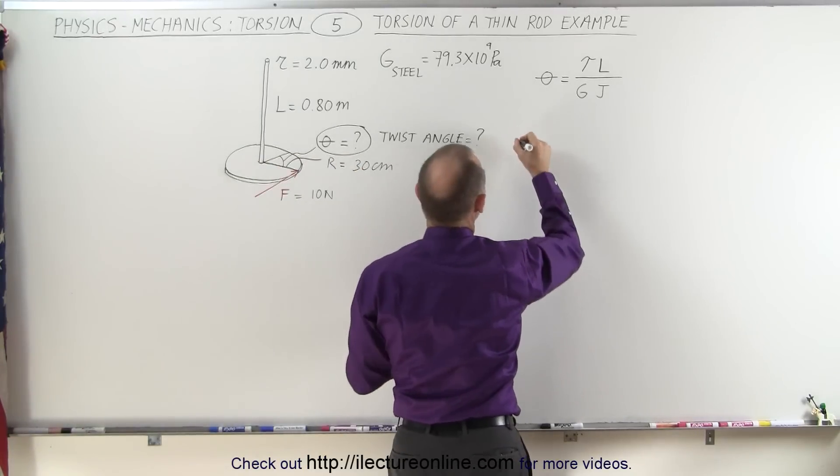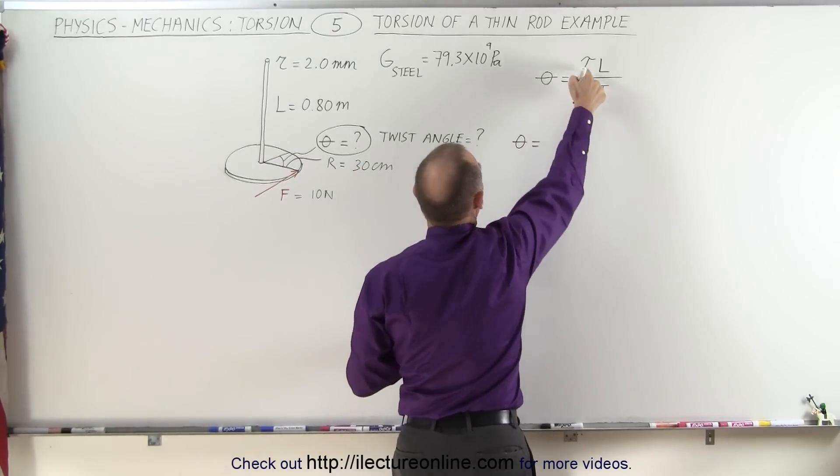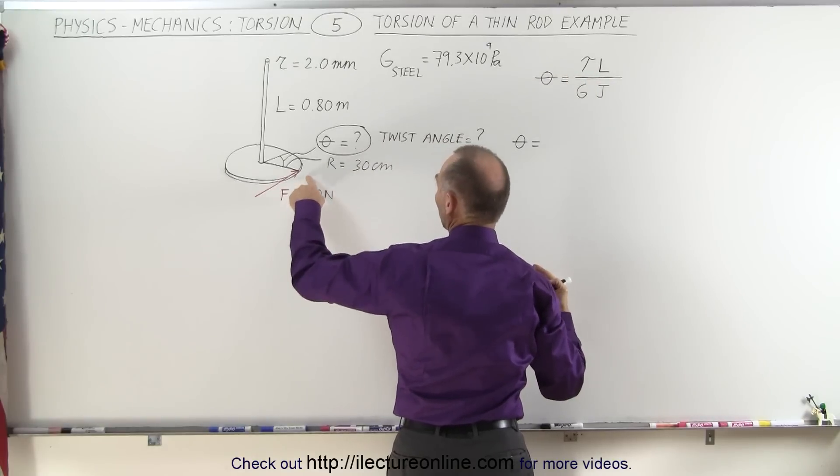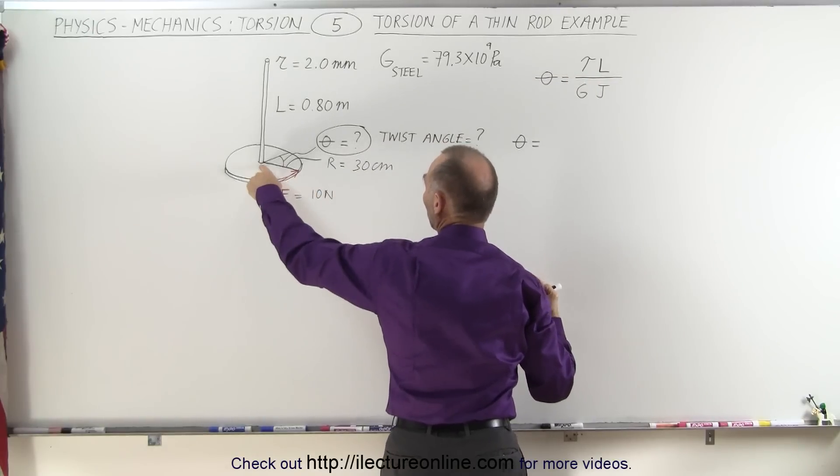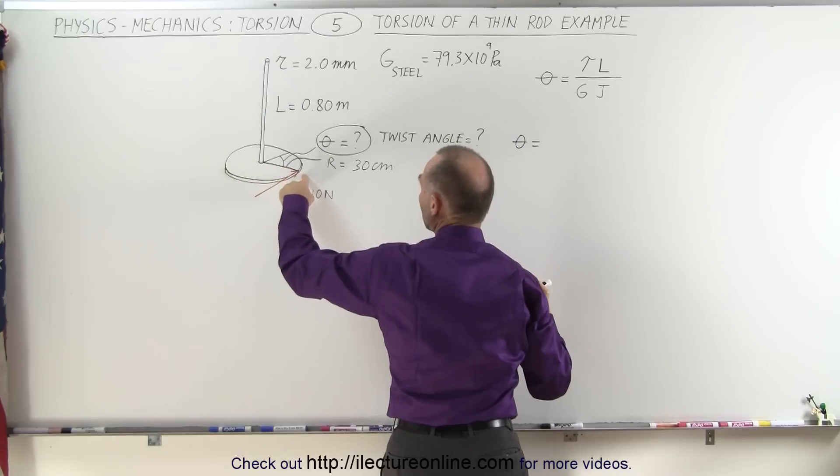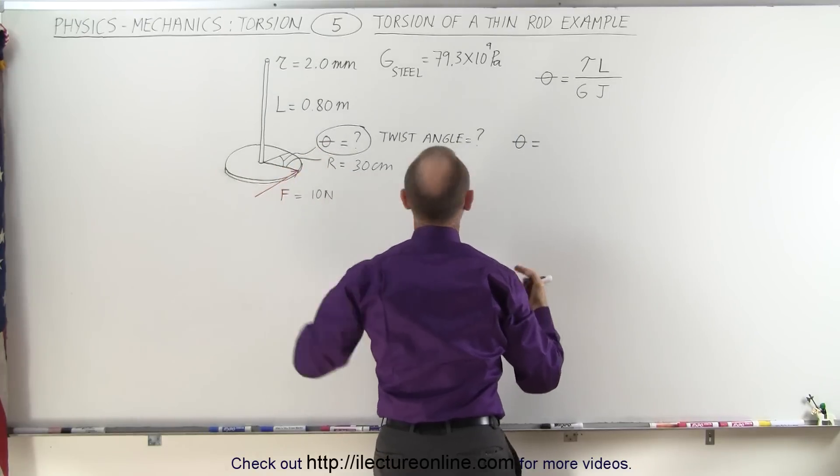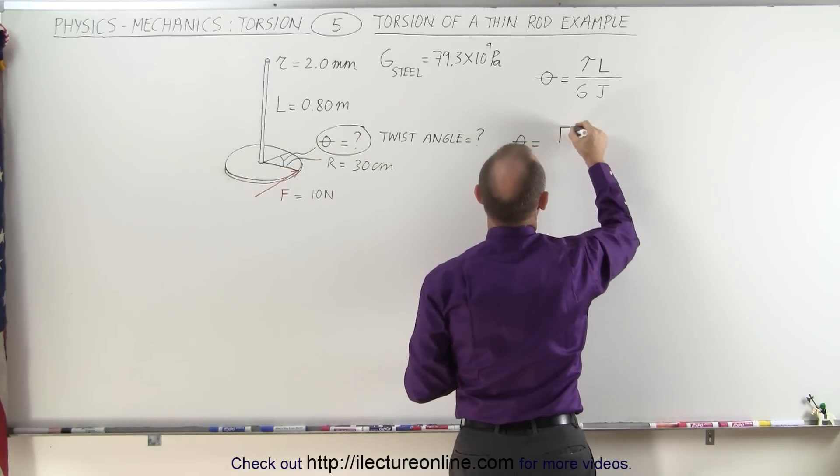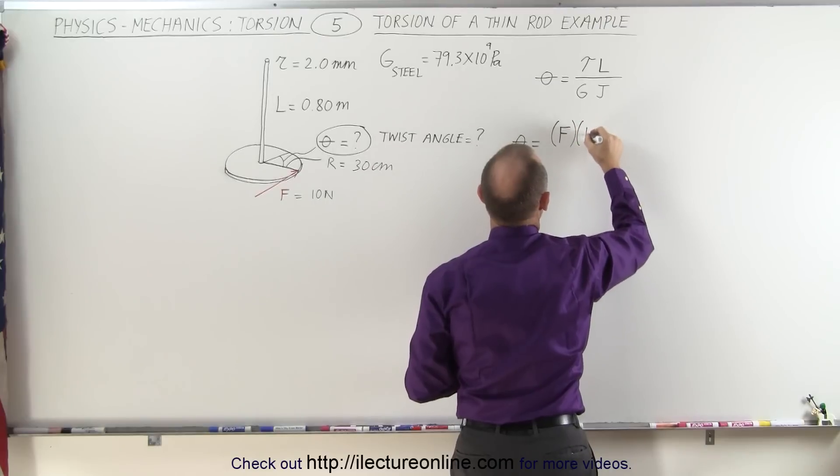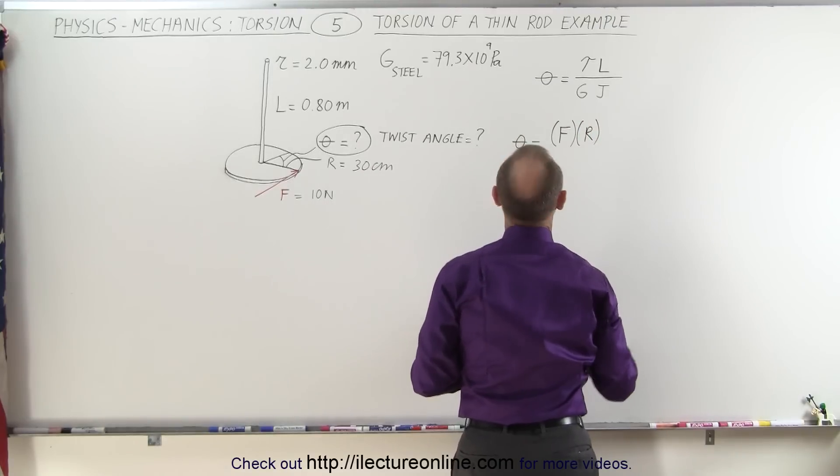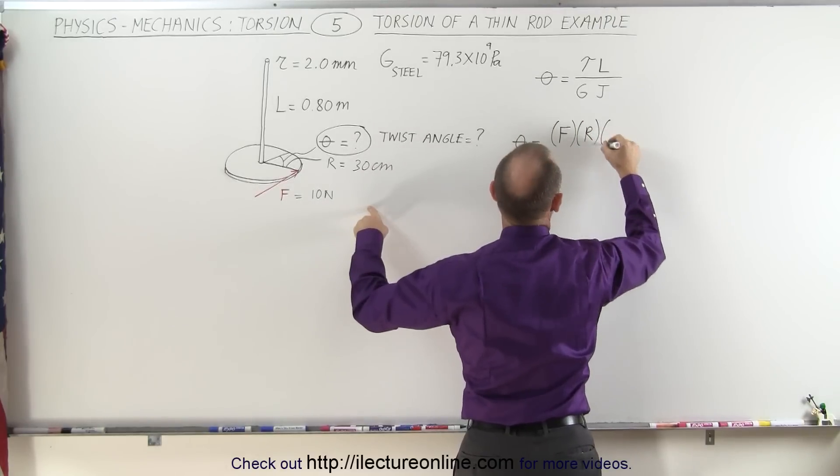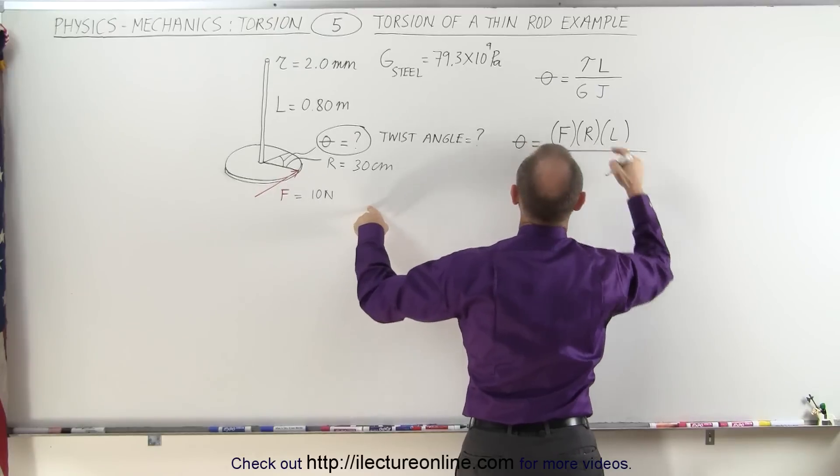So the angle is going to be equal to the torque. By definition, the torque is the force times the perpendicular distance from the point of rotation to the line of action of the force. So that would be force multiplied times the radius of the disc R, and we multiply that times the length L.